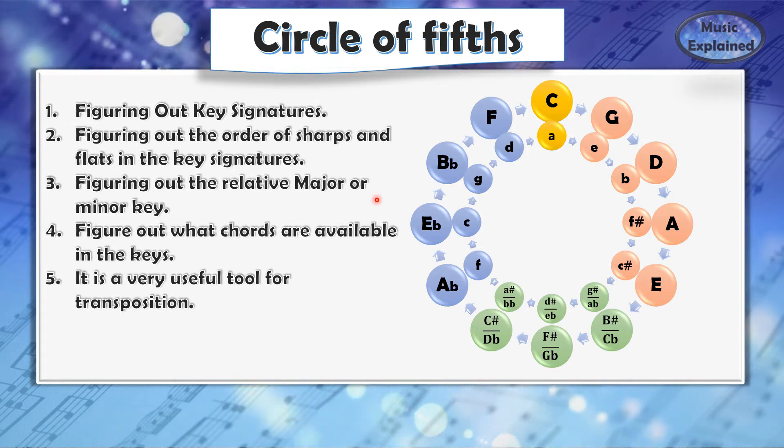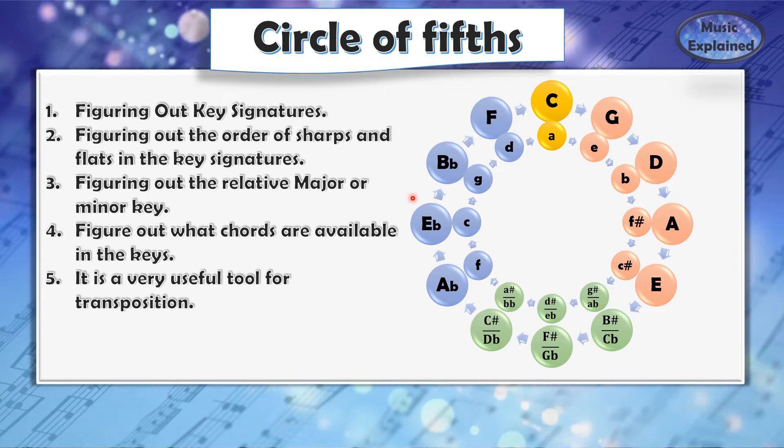you will find that there are twelve semitones in all. If we lay down all these twelve semitones around the circle in a specific order, we get the circle of fifths.